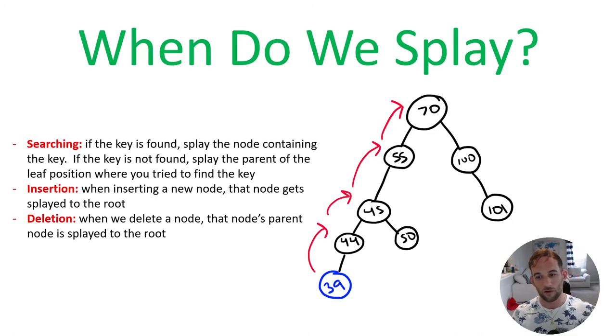Now, say we search for 38. That is not in this tree. So because 38 is not in the tree, we would take the leaf node or what would be 38's parent node. So we take as far down as we can go. In this case, it's 39. We can't go any further. So we still splay 39 in this case.